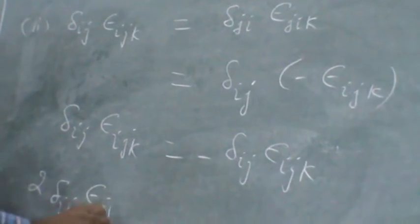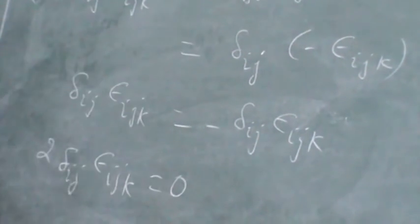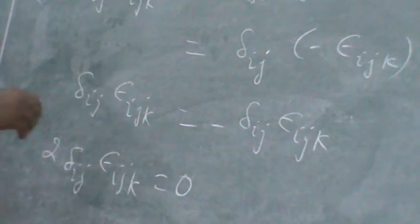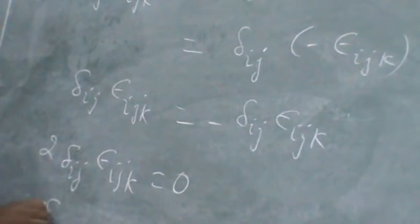You bring this one to the left side. So this is 2 times Delta i j, Epsilon i j k. That equals 0. 2 is a number. So therefore, the answer is, this equals 0.